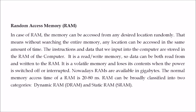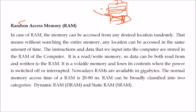Random access memory means you can directly access any block of memory without going through all previous locations. Instructions and data are stored in RAM. RAM is a volatile memory — it will lose all data as soon as the power goes off. Nowadays RAMs are in gigabytes: at least 2 GB, 4 GB, or 8 GB, which is a huge increase compared to 7 or 8 years ago.